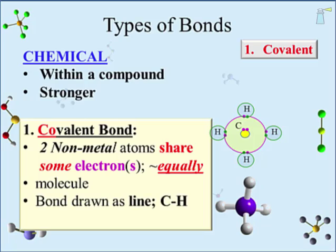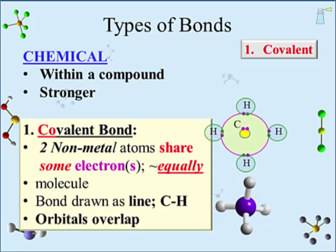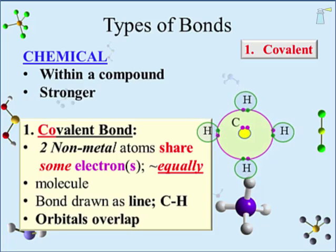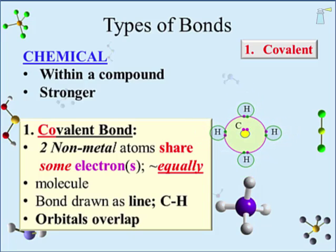One often sees a line drawn between two atoms indicating a covalent bond between them. Another important feature of the covalent bond is that an orbital with a shared electron from one atom overlaps with the orbital of the shared electron on the other atom — the atoms not only touch but, to a small degree, they merge. This and other features of the covalent bond are discussed in more detail in the covalent bonding lecture.